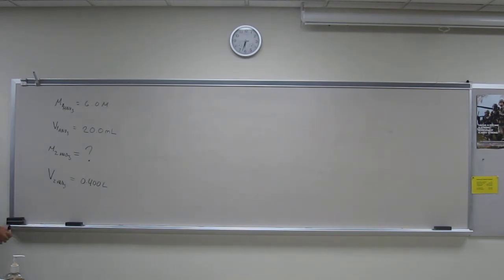So it says you start with 6 molar nitric acid, 20 mils of it. What is the concentration, the final concentration, if you dilute it to 0.400 liters?